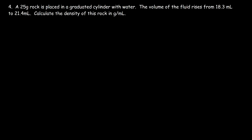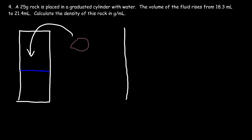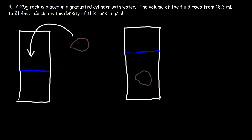Number 4. A 25-gram rock is placed in a graduated cylinder with water. The volume of the fluid rises from 18.3 milliliters to 21.4 milliliters. Calculate the density of this rock in grams per milliliter. So let's draw a picture. We have a graduated cylinder with some water in it, and we're going to place a rock inside the cylinder. What's going to happen is the volume is going to increase — the water level is going to rise. The water level was previously 18.3 milliliters and now it rose to 21.4 milliliters.